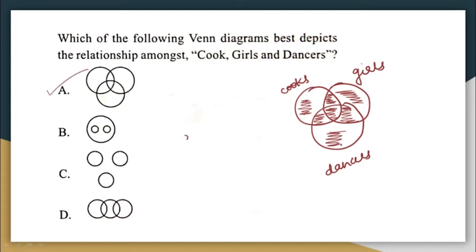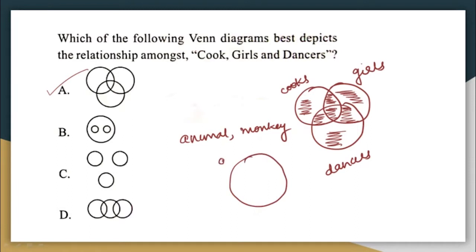If the given words were like animal and monkey — if the question was which Venn diagram best depicts the relationship between animal and monkey — then this will be the set animal. All monkeys are animals, so the monkey set will come inside the set animal. This is how it will be.